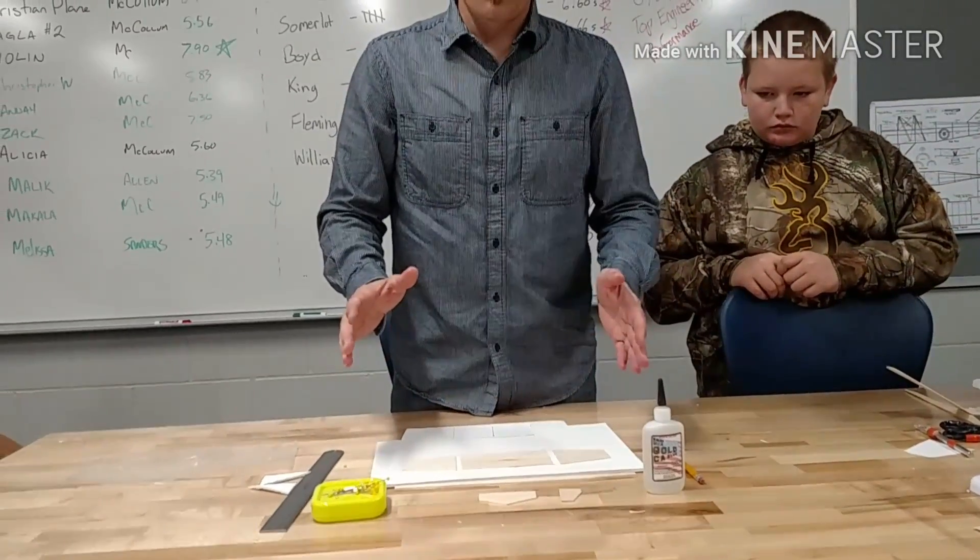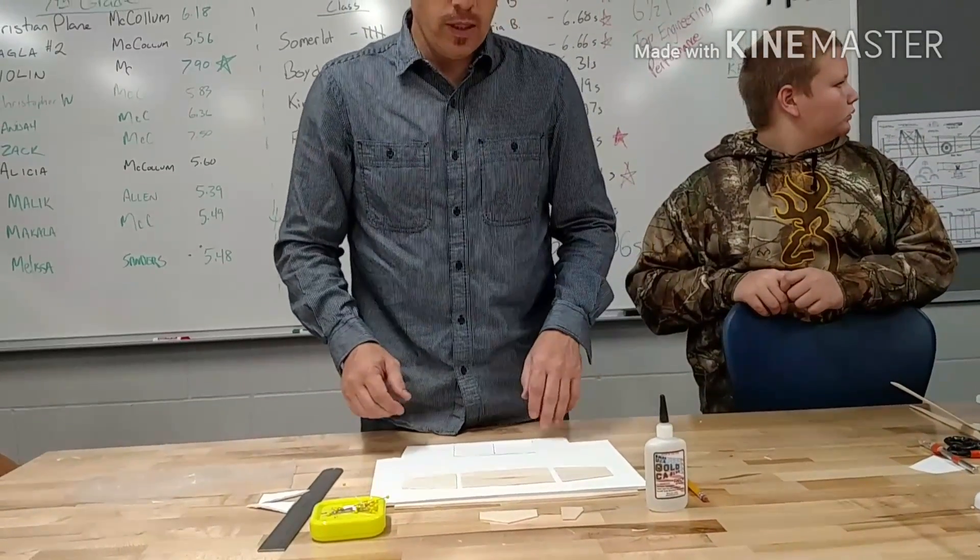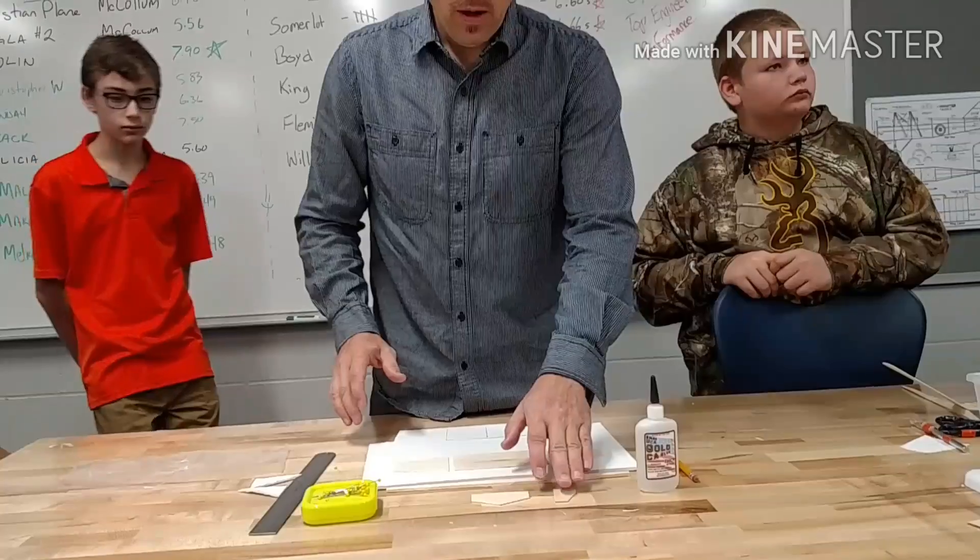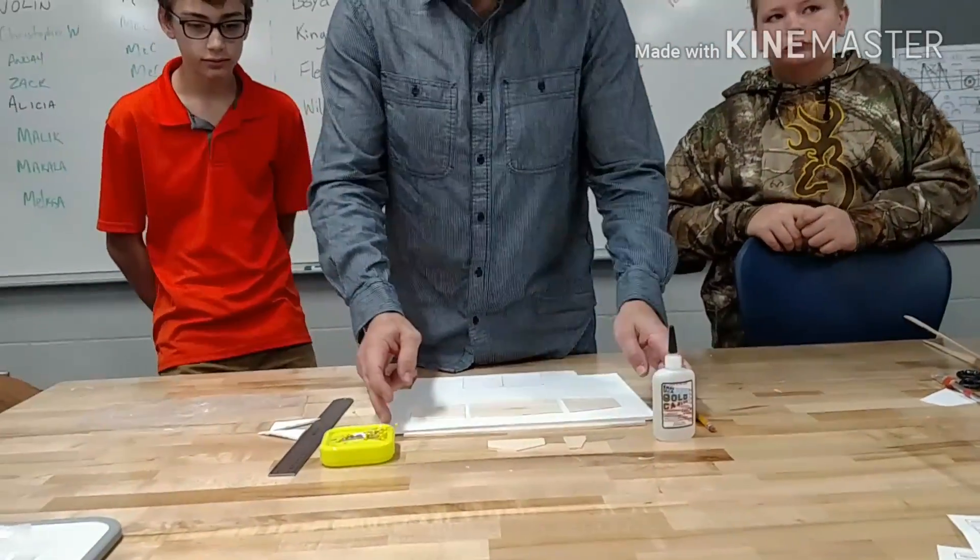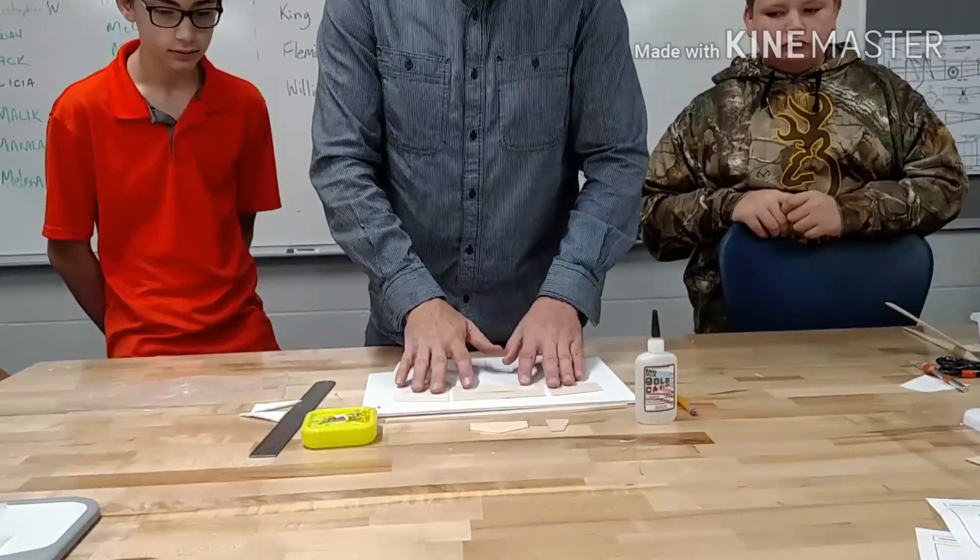This is the step where we're going to glue all of our parts together. The first thing we need to do is have all of our parts, so I have my vertical stabilizer, my horizontal stabilizer, my fuselage, and my wing.